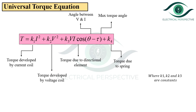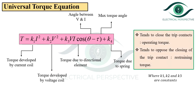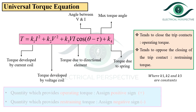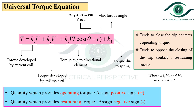K1, K2, and K3 are constants. Please note that the torque which tends to close the trip contact is called the operating torque, and the torque which tends to oppose the closing of the trip contact is called the restraining torque. The quantity providing operating torque is assigned a positive sign, and the quantity providing restraining torque is assigned a negative sign when deriving the trip law.